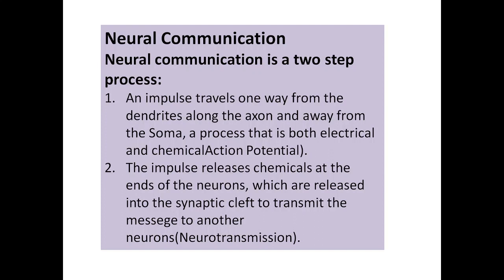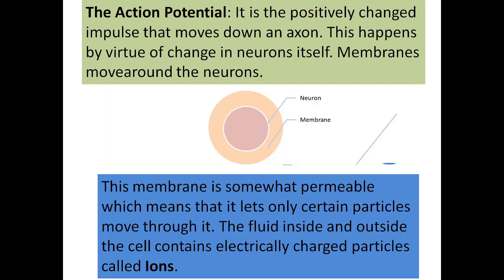Neural communication is a two-step process. First, an impulse travels one way from the dendrite along the axon and away from the soma — a process that is both electrical and chemical, also known as the action potential. Second, the impulse releases chemicals at the end of the neurons into the synaptic cleft to transmit the message to another neuron, a process known as neurotransmission.